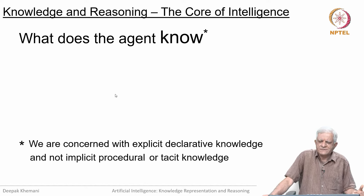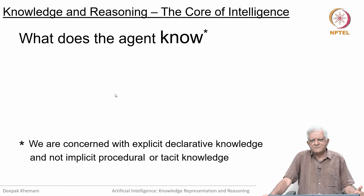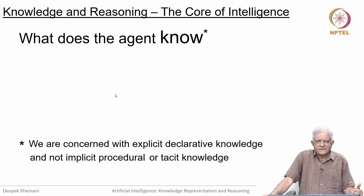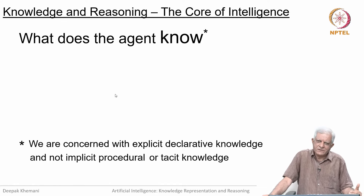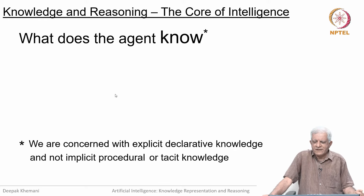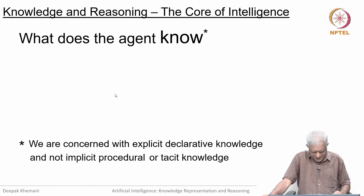There has been some thought that our knowledge is not necessarily declarative or symbolic, but we have things like images that we think about and reason with, and we have intuition and the subconscious mind. We are not getting into that — we are going to focus more on declarative knowledge, knowledge which can be written down on a piece of paper.